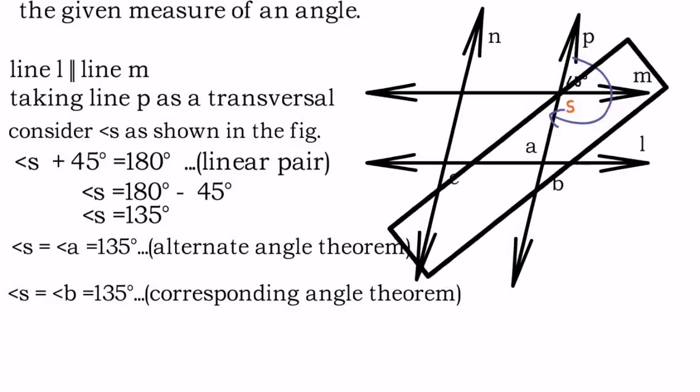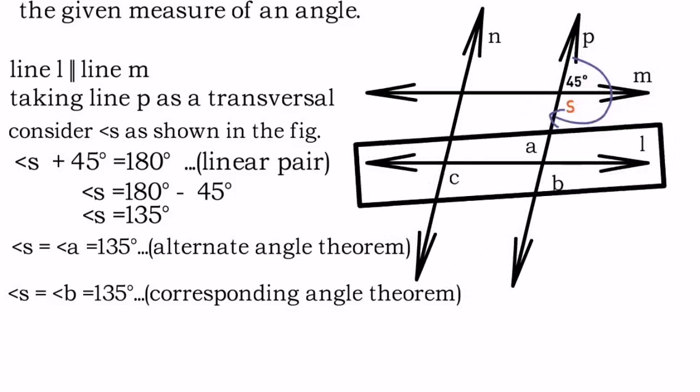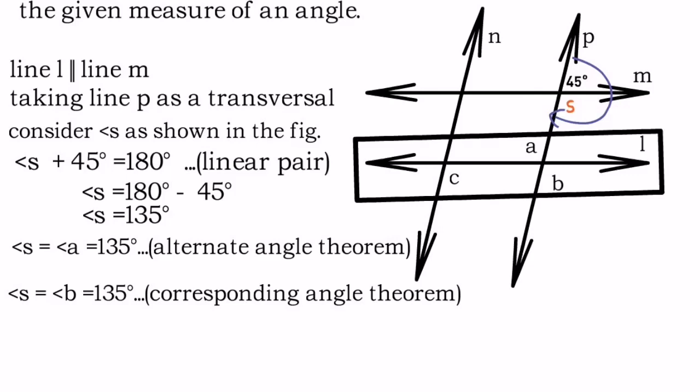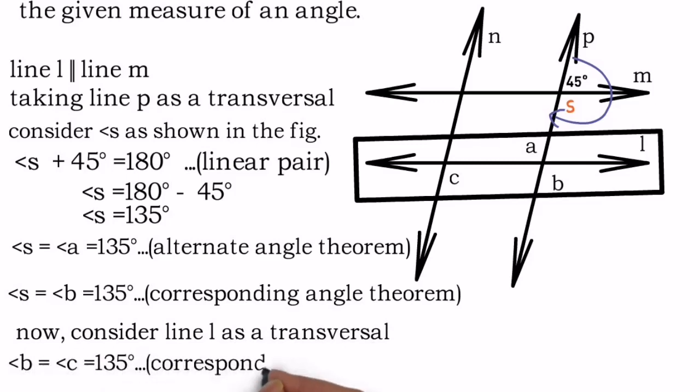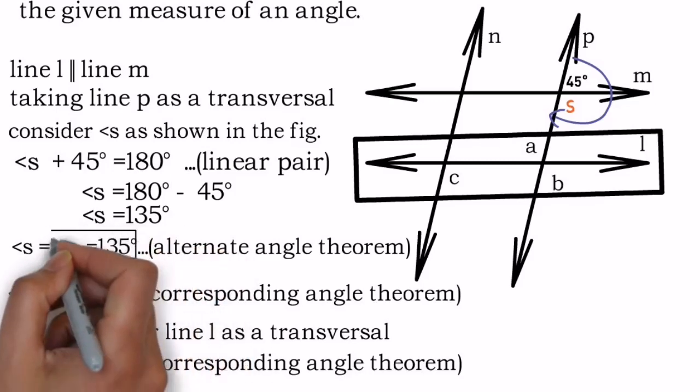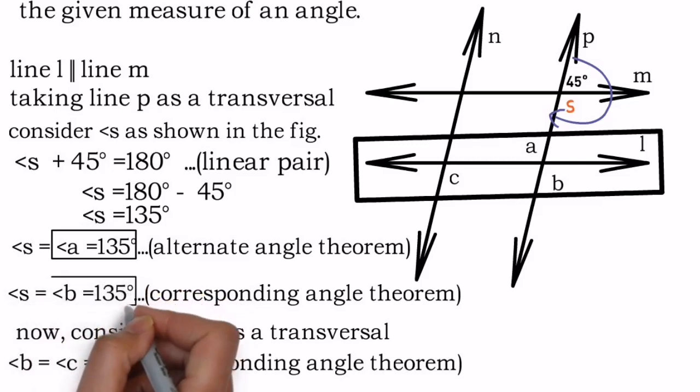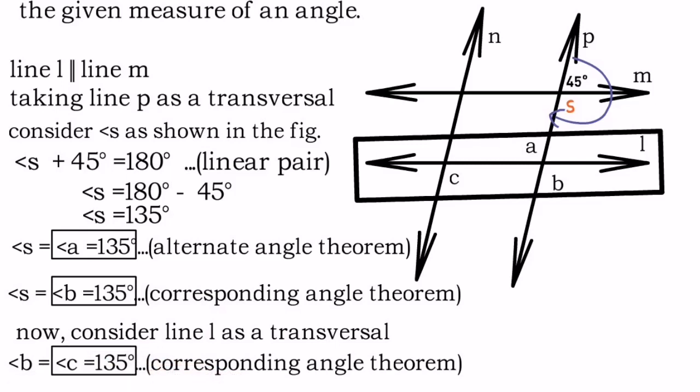Now let's focus on another transversal, line l. If you observe, angle c and angle b are corresponding angles. By considering line l as a transversal, we can find angle c by writing its relation with angle b as corresponding angles. In this manner, we have found all three expected angles: angle a equals 135 degrees, angle b equals 135 degrees, and angle c equals 135 degrees.